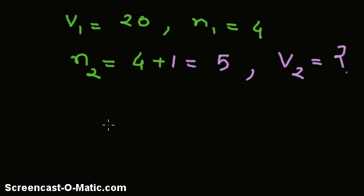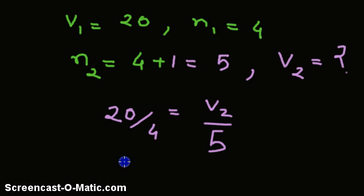Therefore, plugging in the values, we get V1 divided by N1 equals V2 divided by N2. 20 divided by 4 equals V2 divided by 5. As such, we get V2 equals 25 liters. This is the answer.